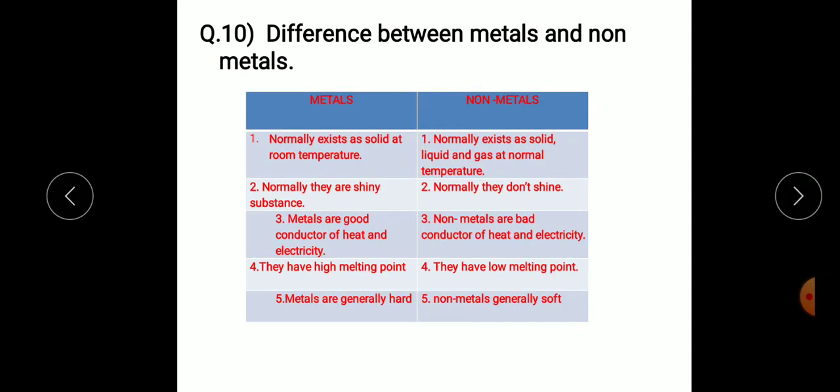Question number 10. Difference between metals and non-metals. Metals normally exist as solid at room temperature. Non-metals normally exist as solid, liquid and gas at normal temperature. Metals are shiny substances, but non-metals do not shine.